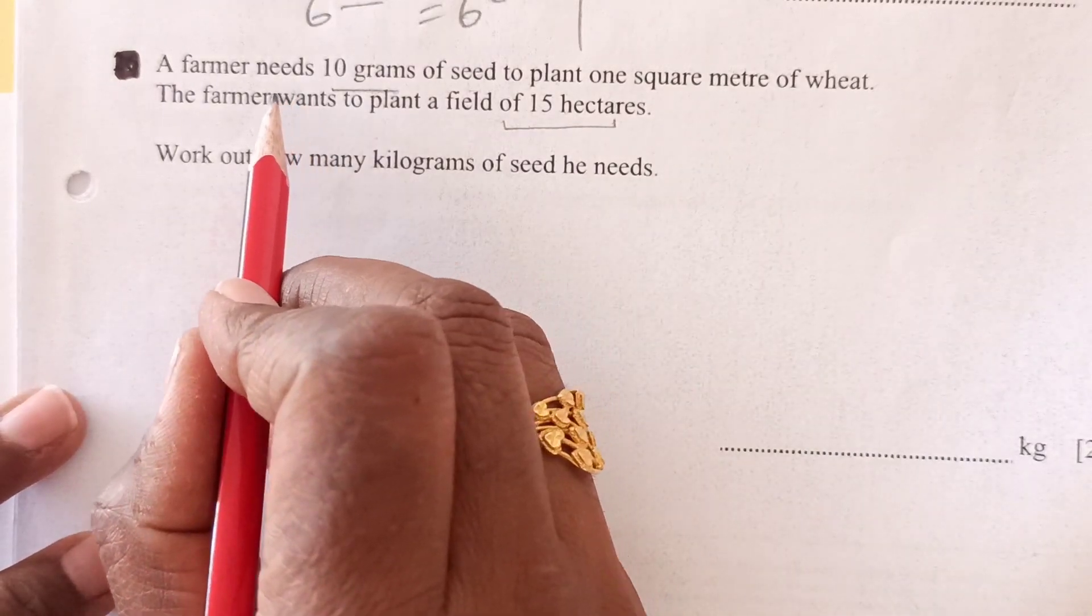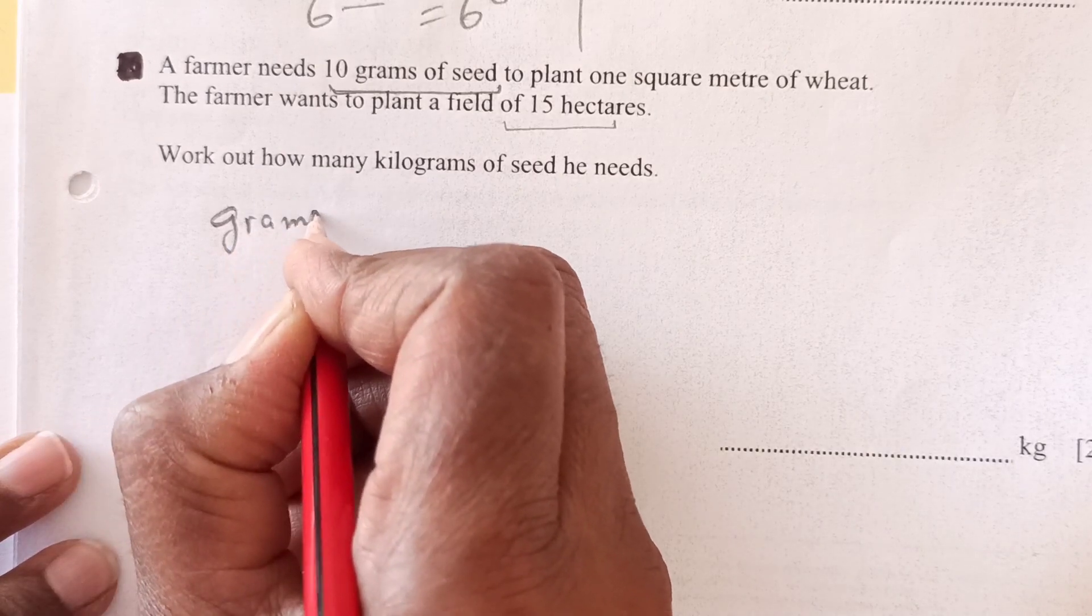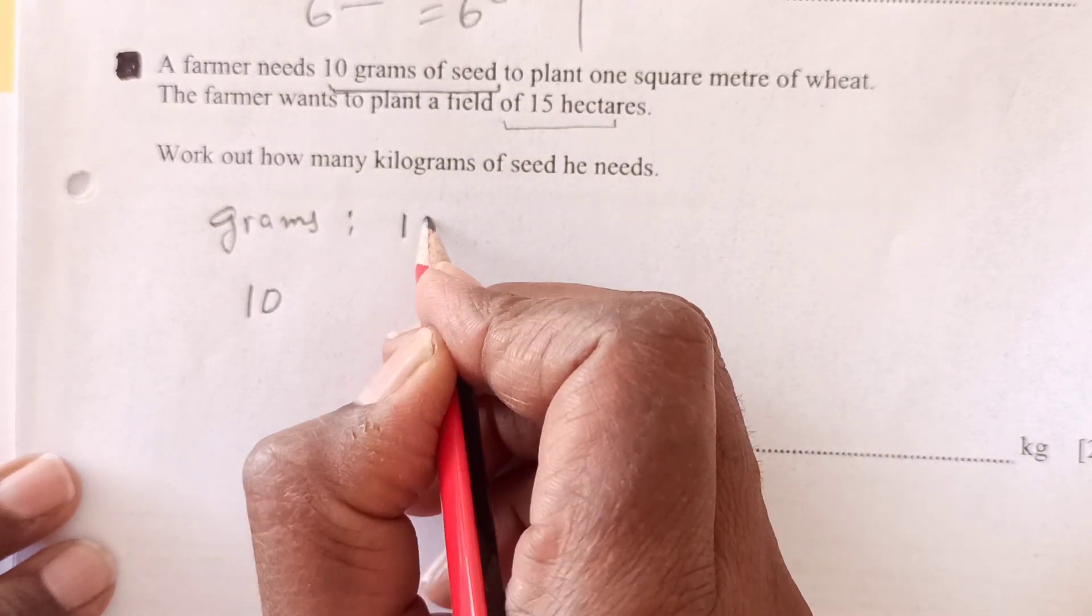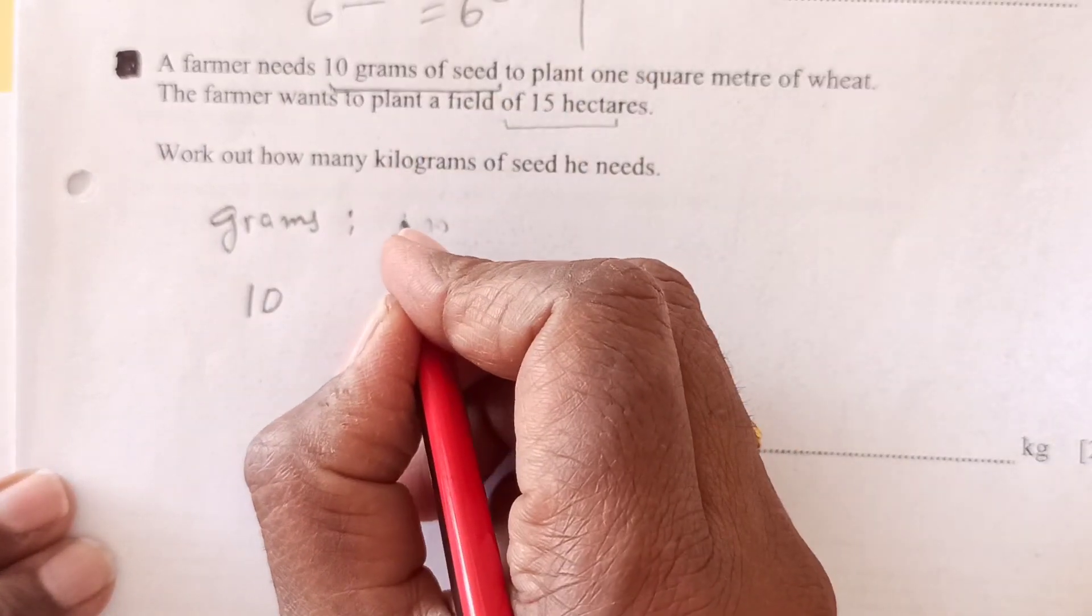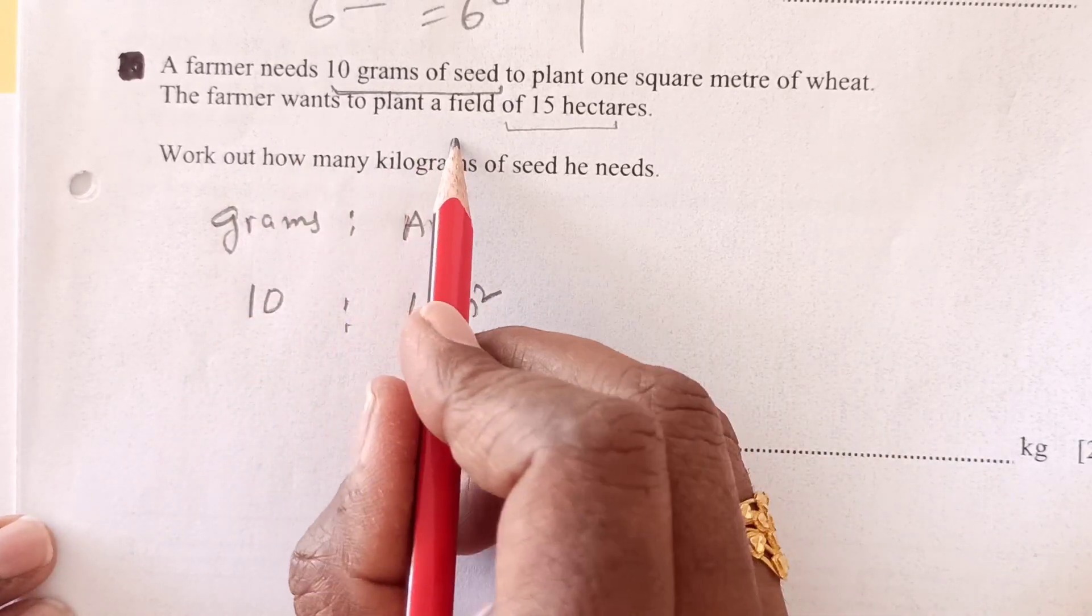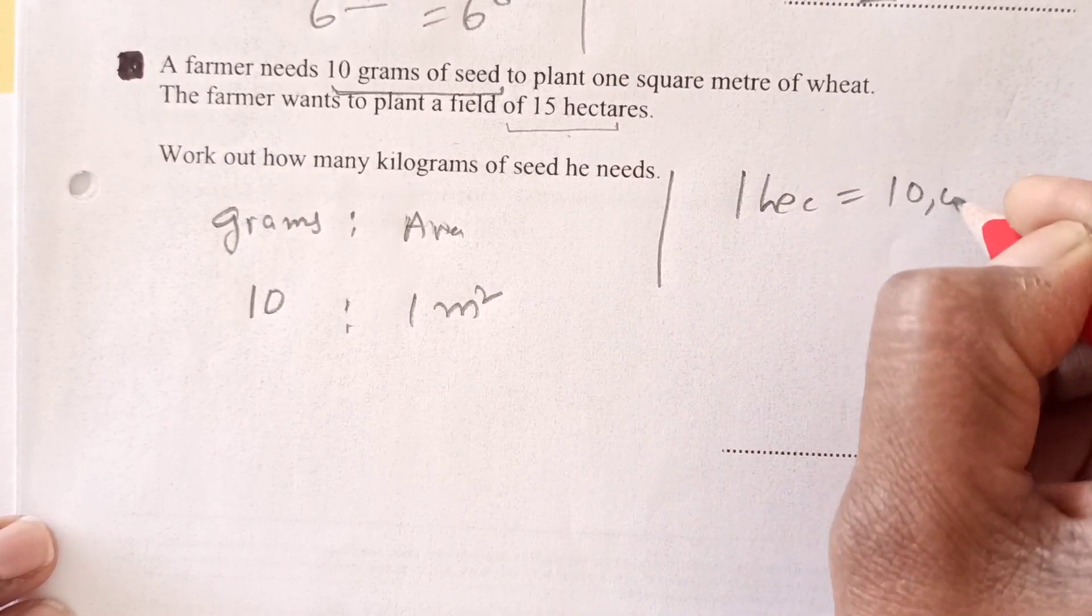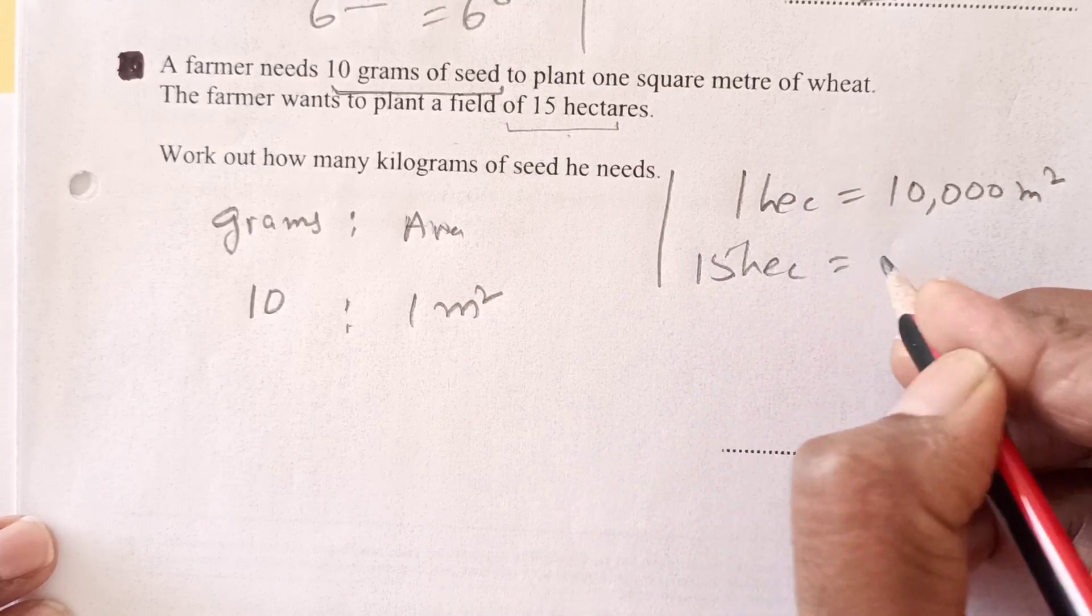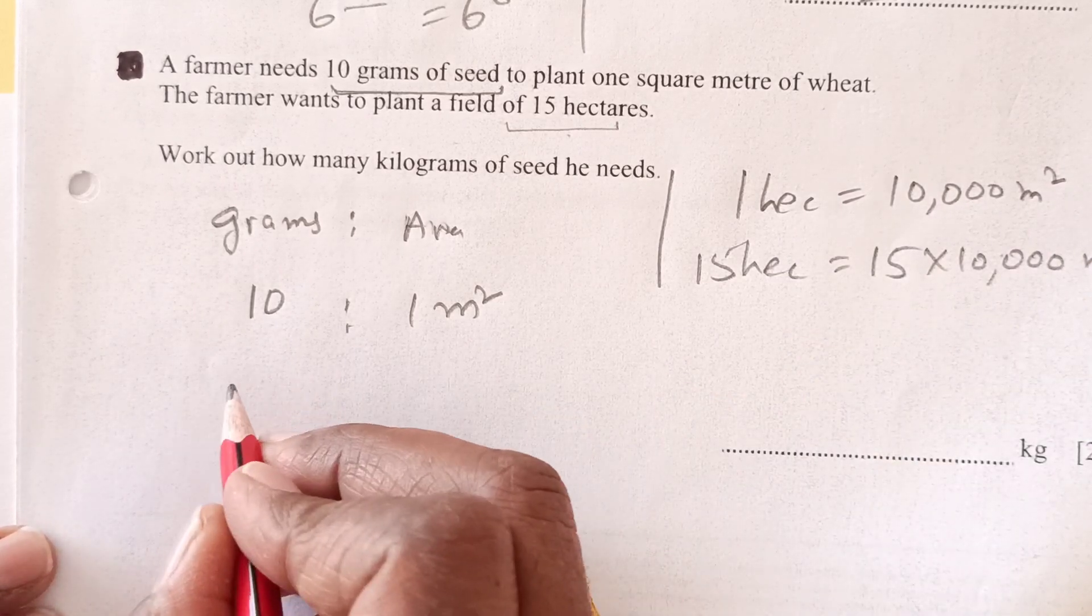So let's start. 10 grams of seeds, so I'll give it as a fraction. 10 grams are needed for 1 meter square. So this we can say the area, which is 1 meter square. So the farmer wants to plant 15 hectares. Now 1 hectare equals 10,000 meter squares. So 15 hectare is going to be 15 times 10,000 meter square.